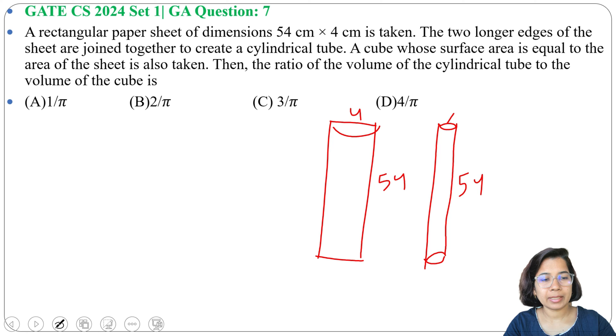Here height is 54 and this dimension is 4 cm. A cube whose surface area is equal to the area of the sheet is also taken. We have a cube whose surface area is same as this rectangular sheet area.